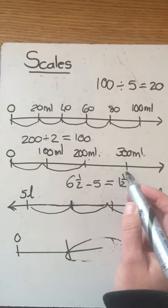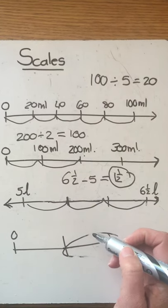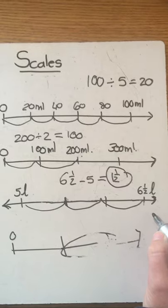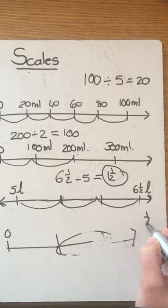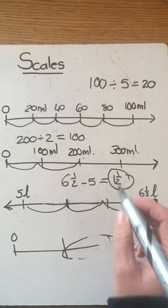So if I have one and a half liters divided by the three spaces it gives me a half because a half plus a half plus a half gives me one and a half.